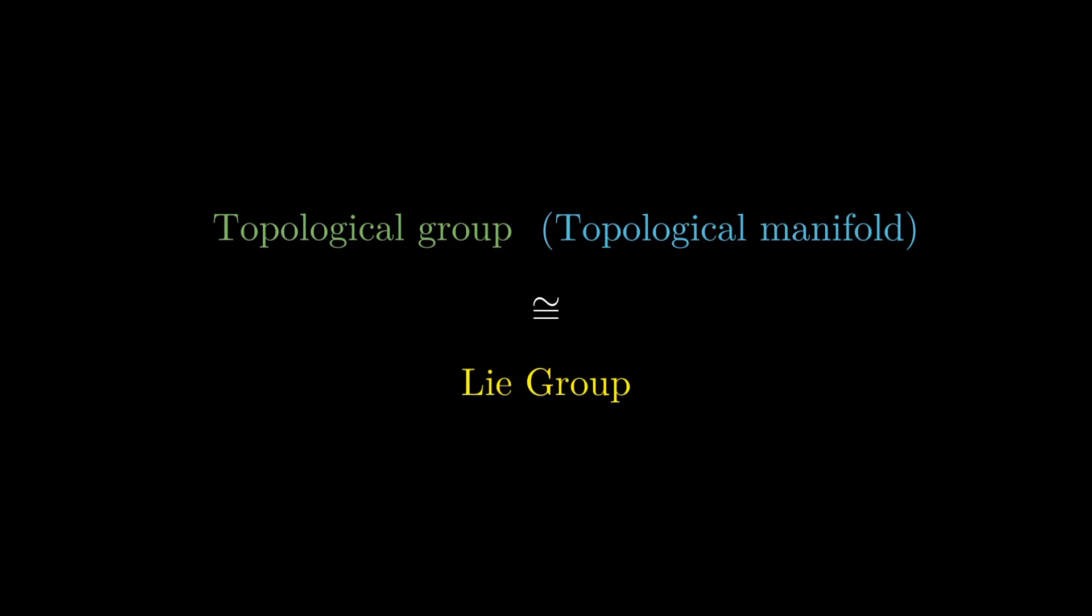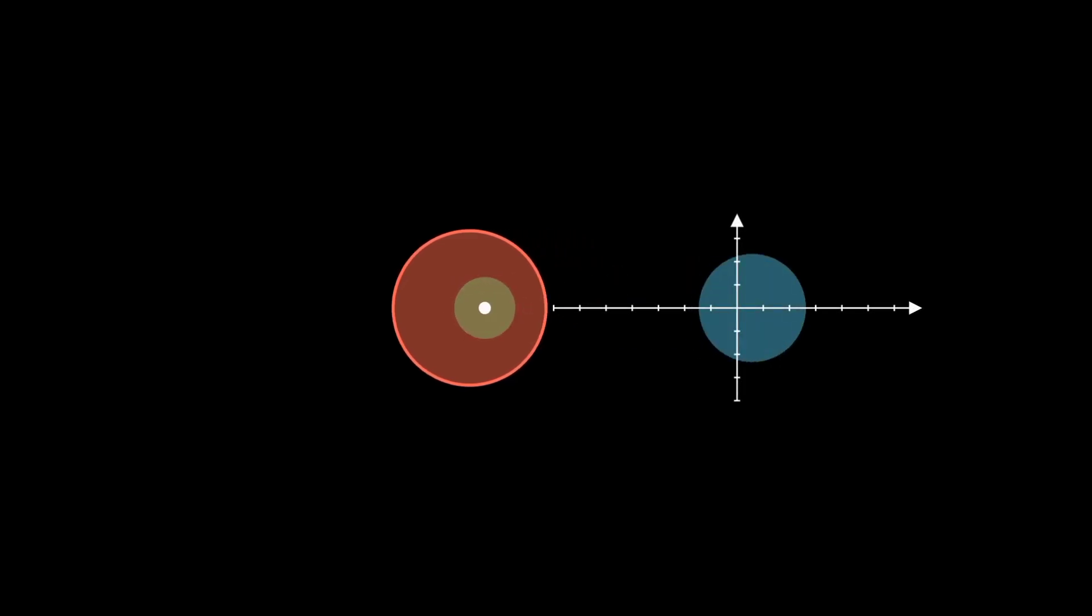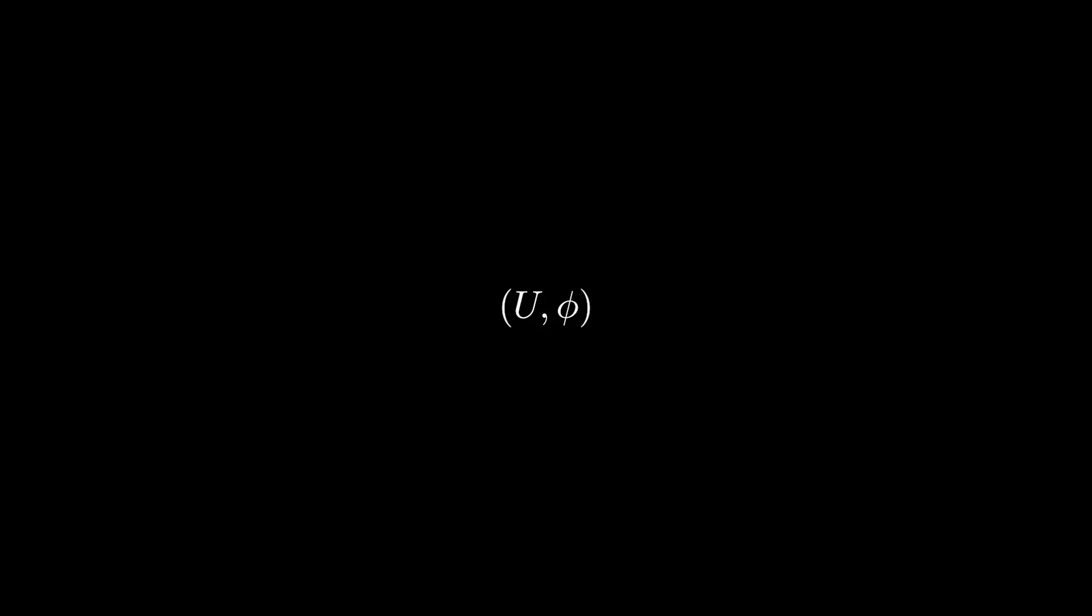Lie groups. To understand it, we need to understand this term. Recall the local resemblance of manifolds to a Euclidean space. The pair containing the neighborhood and the homeomorphism is called a chart.